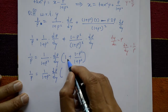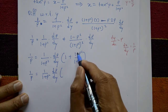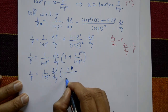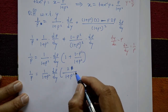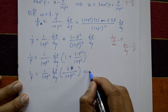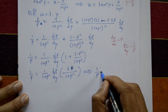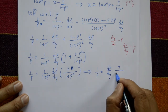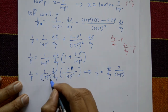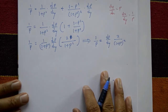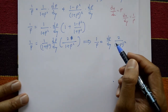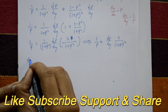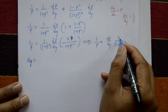Cross-multiplying and simplifying: 1 + p² and 1 - p² terms combine, p² cancels, leaving 2 remaining. So 1/p = (2/(1 + p²)²) · dp/dy. Separating variables: dy = p(1 + p²)² / 2 · ... rearranging gives dy = 2p dp / (1 + p²)².